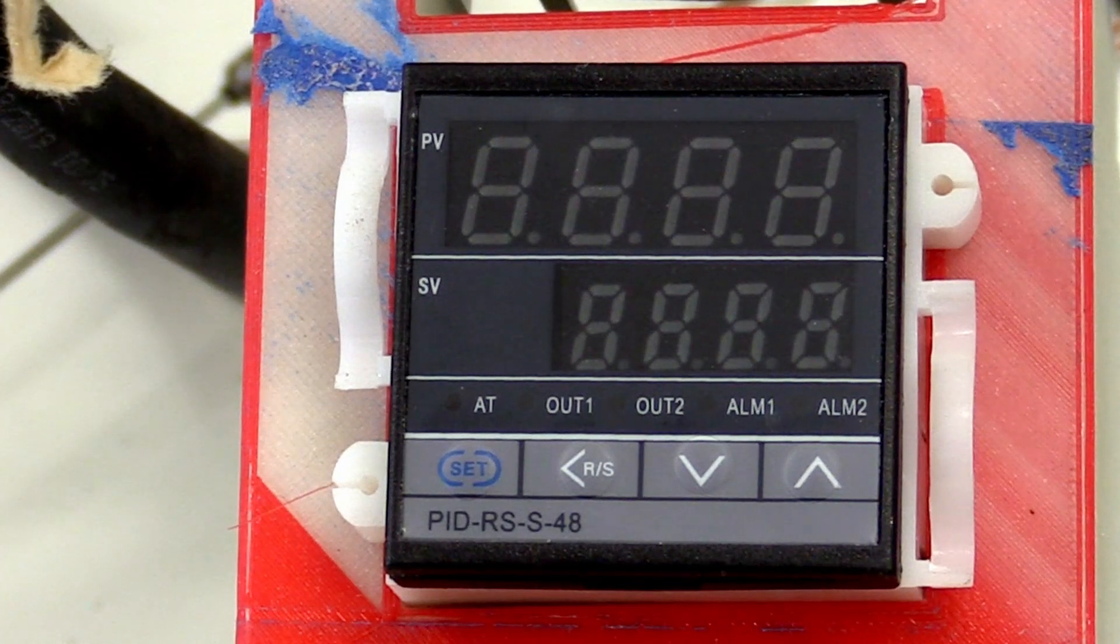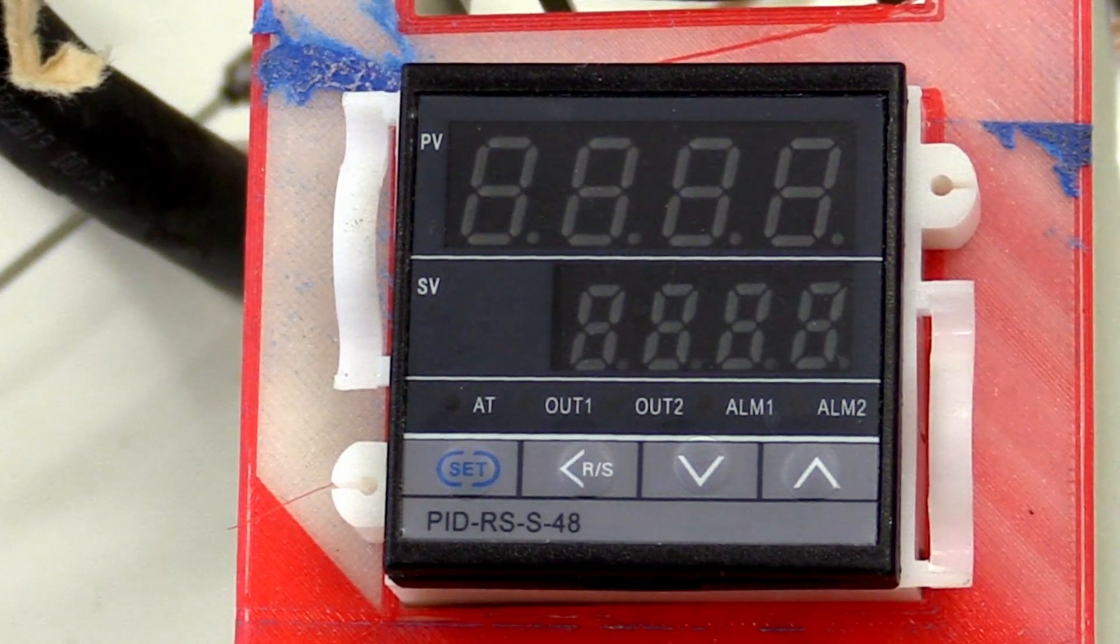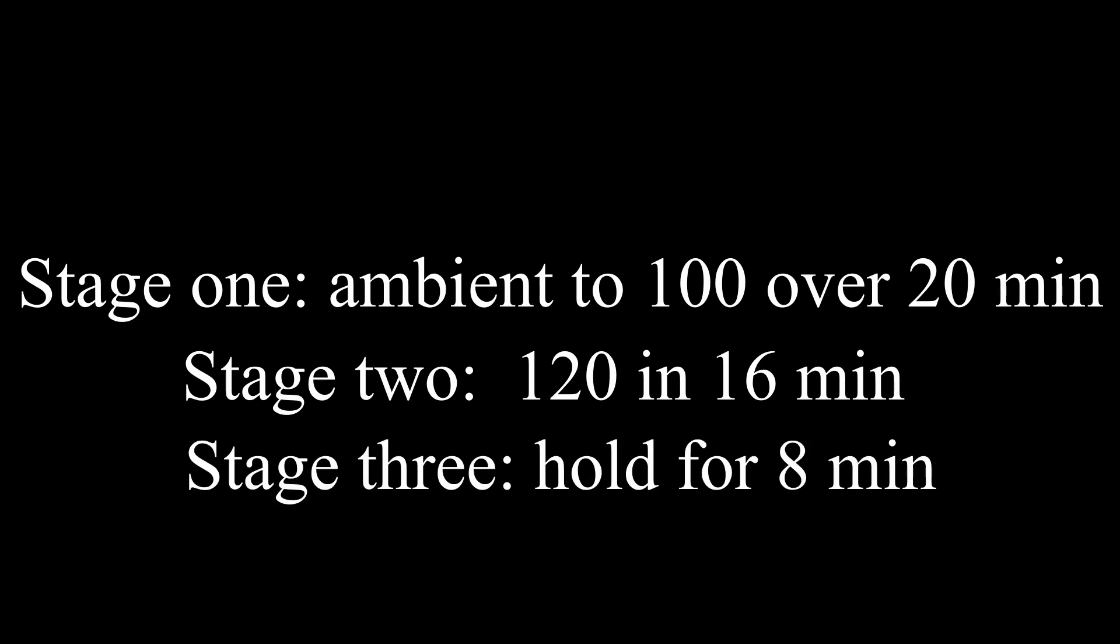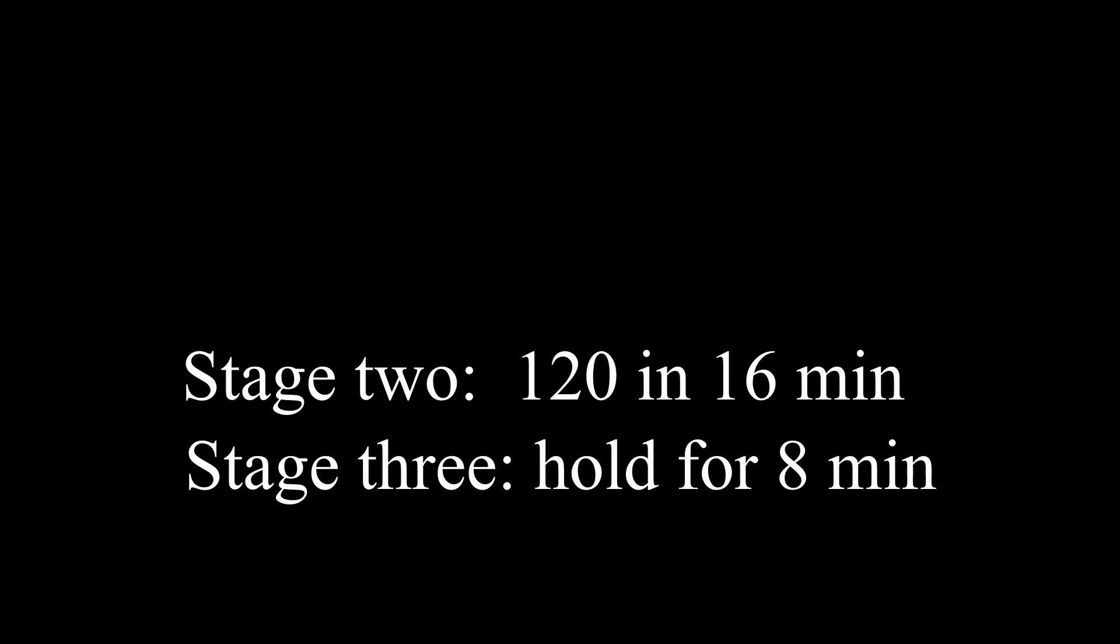In this example, we will use three stages. The first stage goes from the ambient temperature to 100 degrees over 20 minutes. Then, we will step up to 120 degrees over 16 minutes. And finally, we will hold that temperature for 8 minutes and then the controller will shut off.